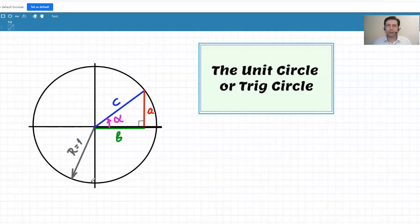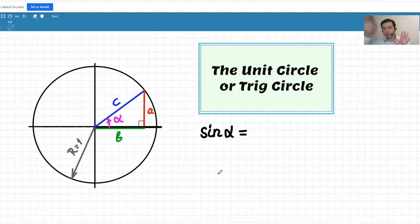If we want to define the sine of alpha from this drawing or from this triangle, what will it be? So sine of alpha, by the definition, sine of alpha is the ratio of the opposite leg of the right triangle. Opposite means opposite to the angle itself. If we're talking about alpha, then opposite is A. So the opposite leg of the right triangle, A, in ratio to the hypotenuse, which is C.